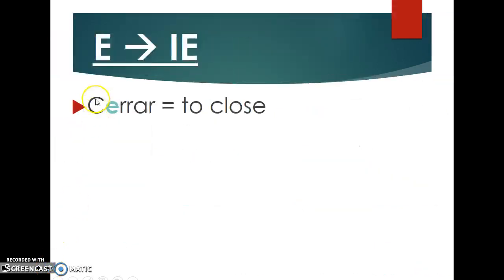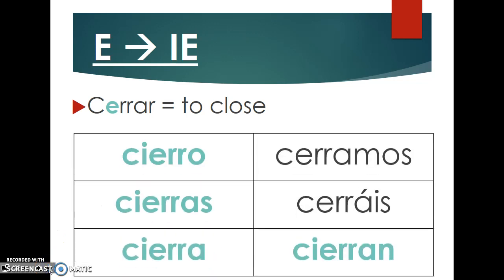So for the E to IE category, an example is the verb 'cerrar,' which means 'to close.' This E in the stem is the one that changes. The conjugation looks like this: cierro, cierras, cierra, cerramos, cerráis, cierran. As shown in blue — matching the boot color — those are the forms that stem change. The nosotros and vosotros forms, cerramos and cerráis, do not stem change.